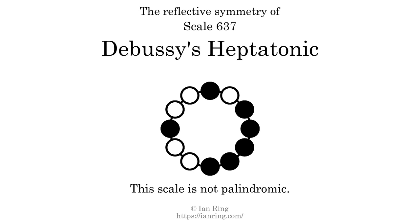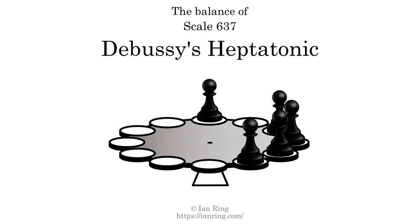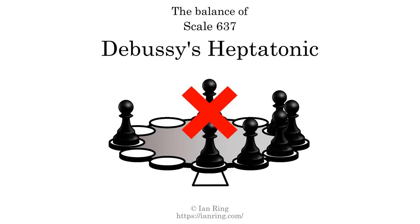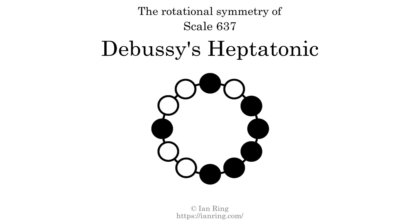This scale has no reflective symmetry. This scale has a different pattern of intervals ascending and descending, so it is not palindromic. This scale has no ridge tones. The scale is not balanced, meaning the tones are not spaced equally enough for the center of gravity to be in the center. The inverse of this scale is a mirror image — what you get when the sequence of intervals is reversed. The inverse of this scale is scale 1993, also known as Catoptian. This scale is chiral; it cannot transform into its inverse by rotational transformation. This scale has no rotational symmetry.